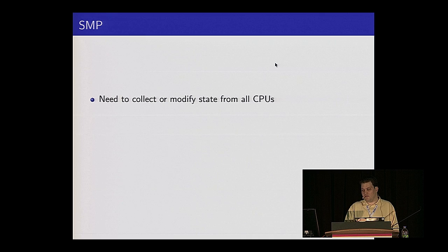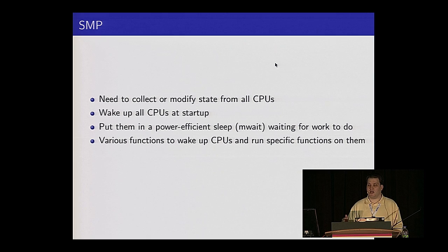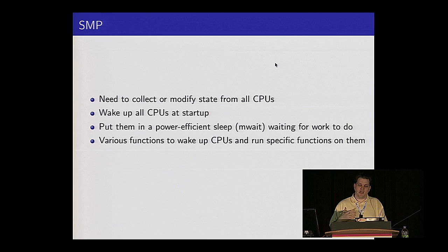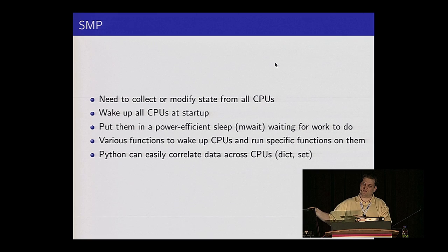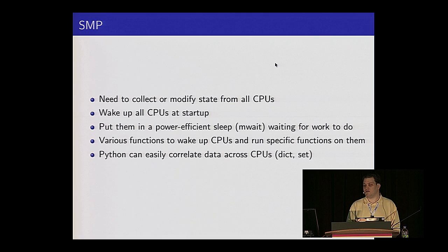Another one we wanted to do: I mentioned 'on CPU zero' — we want to test highly parallel systems, not just the CPU you booted on. Grub only knows about the CPU you booted on. So we need to go collect and modify state on any random CPU. We actually wake up every CPU at runtime, which Grub doesn't do, put them all into a sleeping loop using MONITOR/MWAIT, and say 'sit there and wait for me to have work for you.' Then we have a few C functions that say 'go wake up that CPU, run this instruction on it, get back to me with the result,' and we bind all those functions to Python. Python's great data structures give us the ability to correlate those results.